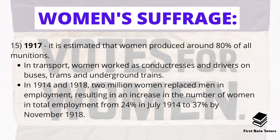By 1917 it's estimated that women produced around 80% of all munitions. Women also worked in transport as conductresses and drivers on buses, trams and underground trains. Between 1914 and 1918, two million women replaced men in employment — the men who had gone to serve as soldiers. This resulted in an increase in women in total employment from 24% in July 1914 to 37% by November 1918.